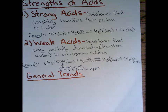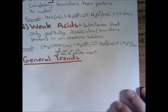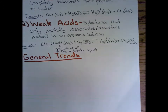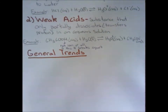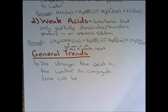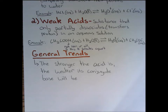With general trends, there is one major trend: the stronger the acid, the weaker the conjugate base will be — and vice versa. This trend will make more sense as we start doing calculations with strong and weak acids and bases, and you'll start to see that transfer.